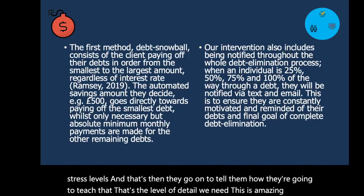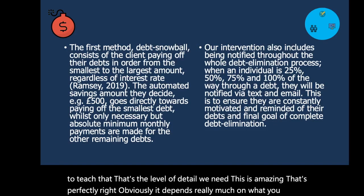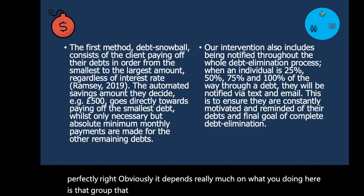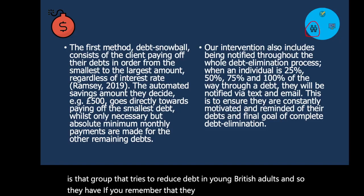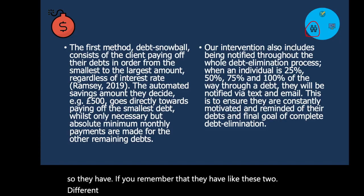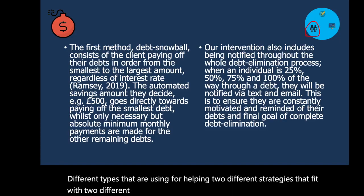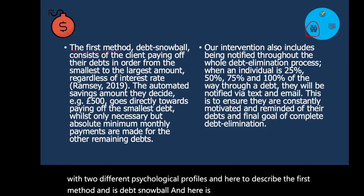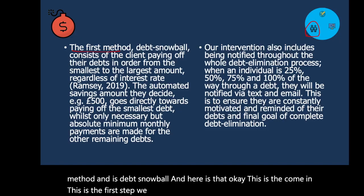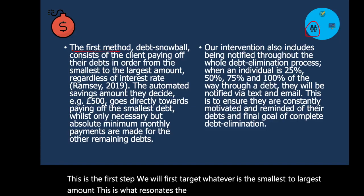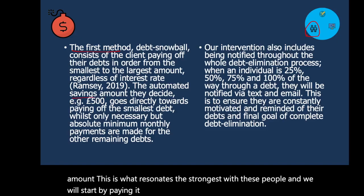Obviously it depends on what you're doing. Here's the group that tries to reduce debt in young British adults. They have two different strategies that fit with two different psychological profiles. Here they describe the first method: they will first target whatever is the smallest to largest amount — this is what resonates strongest with these people — and they will start by paying it down. They select the savings amount and give an example of what happens to that saving amount.